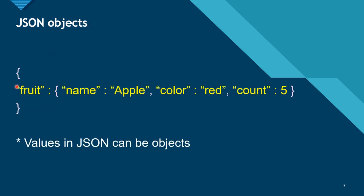Here the value of this key is a JSON object. It starts with a curly bracket and ends with a curly bracket, and it contains key-value pairs separated by commas. This whole thing is also a JSON object — it contains a key-value pair where the key is 'fruit', and the value is another JSON object containing more key-value pairs: name 'apple', color 'red', and count 5.